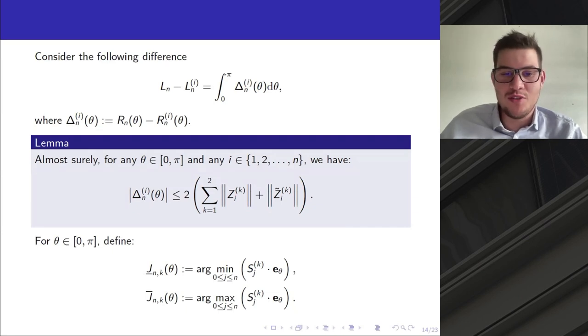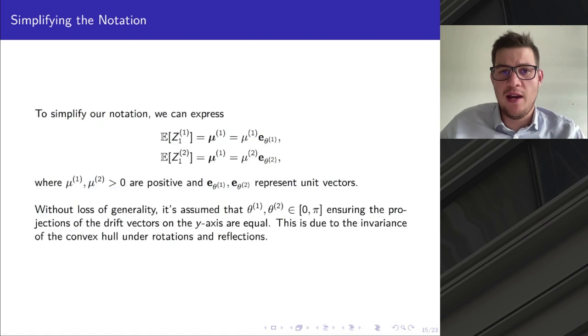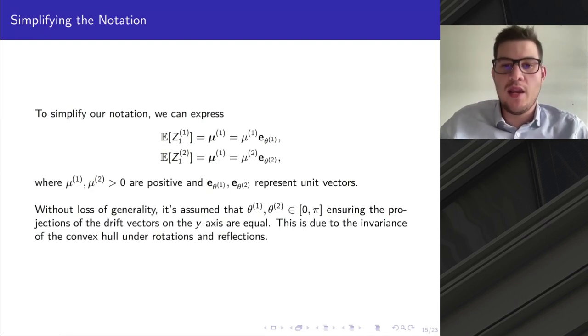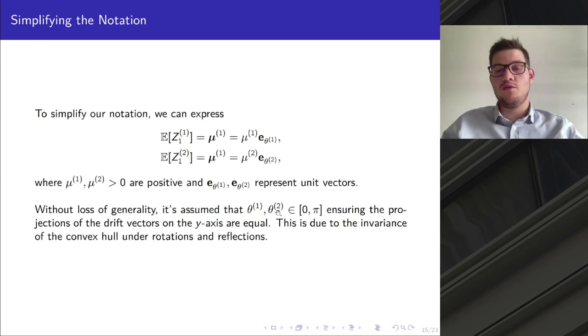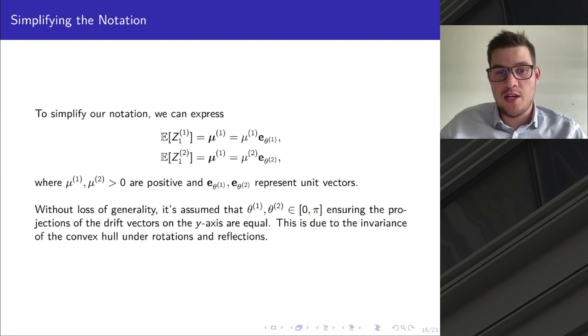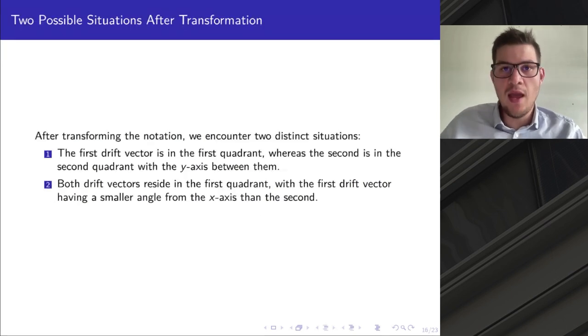Next we introduce some interesting variables. For example, j underline and j overline for k tells you the time where the minimum projection and maximum projection occur. To simplify the problem a little bit, we can introduce the polar expression of these drift vectors. Without loss of generality, we can assume that θ1 and θ2, which are the angles of the drift vectors of these two walks, are in the upper half plane. We can ensure that the projection of the drift vectors on the y-axis are equal. This is because the convex hull is invariant under rotations and reflections.